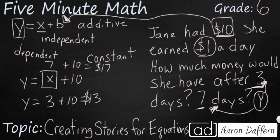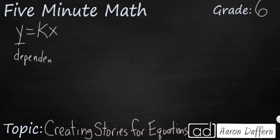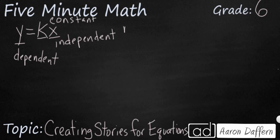Now let's look at a multiplicative relationship. When we're looking for an equation that shows a multiplicative relationship, it's typically going to follow this format: y equals kx. Y is our dependent variable — it's going to change based on the interaction between x, our independent variable, which starts things off, and a constant represented by k — though it could be any letter — which is multiplied by the independent variable. So we can call this a multiplicative relationship.